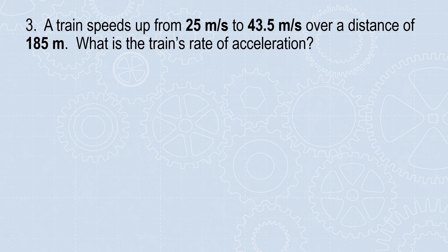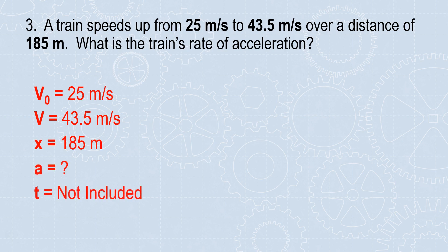Question 3: A train speeds up from 25 meters per second to 43.5 meters per second over a distance of 185 meters. What is the train's rate of acceleration? I have what I'm solving for, what's not included, and all of my given information. Here's my formula. You need to substitute in and then evaluate for the acceleration.